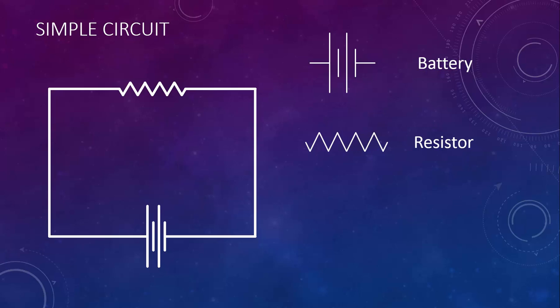Instead of a resistor, we can have a light bulb in the circuit. This brings us to Ohm's Law.